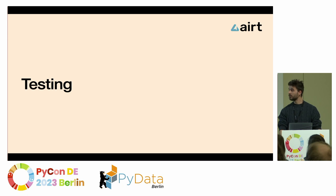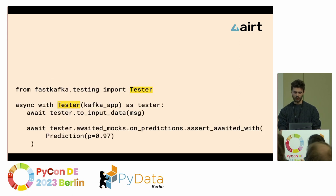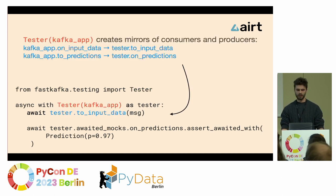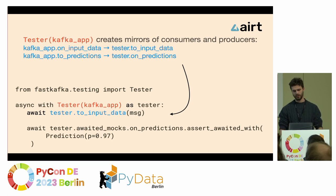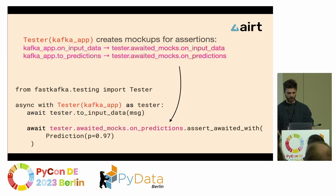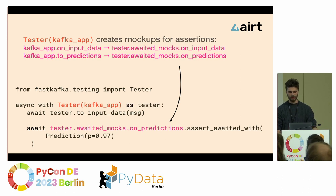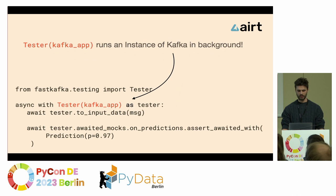Next, we wanted to be able to test our app. We designed a tester class to which you pass your Kafka app. The tester class creates mirrors of consumers and producers — where your Kafka app is producing, the tester can consume, and vice versa. We also create mockups that you can assert to check if messages were sent to your topics. The tester also runs an instance of Kafka in the background.